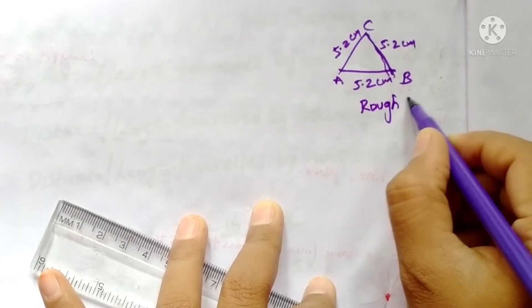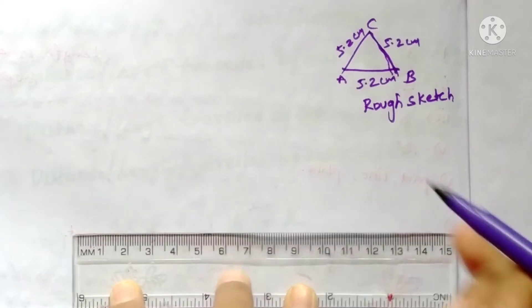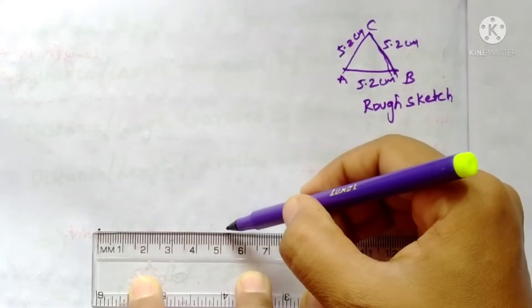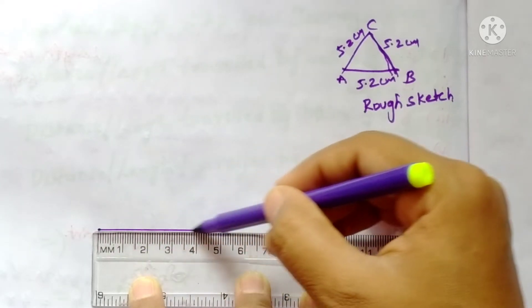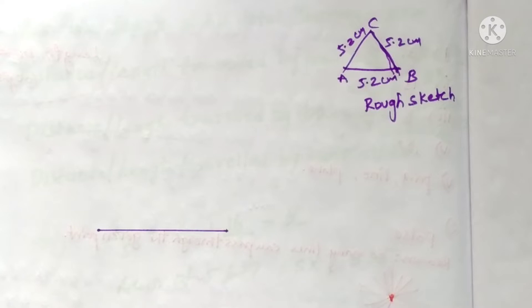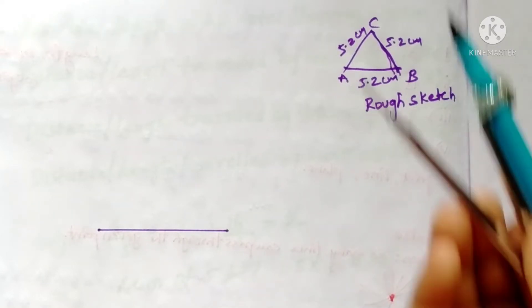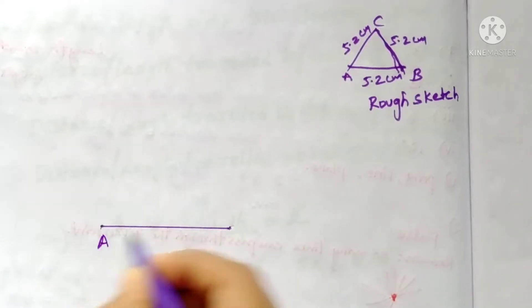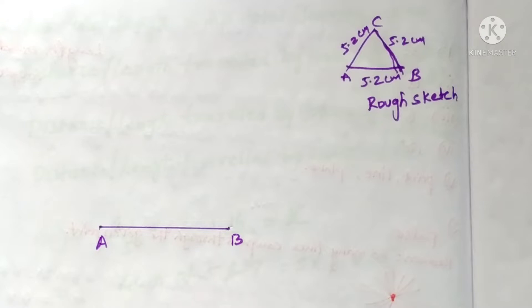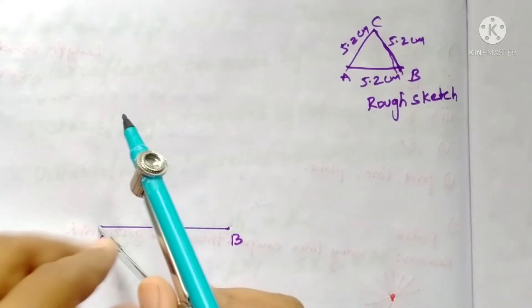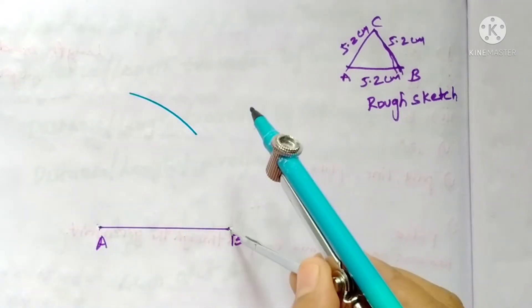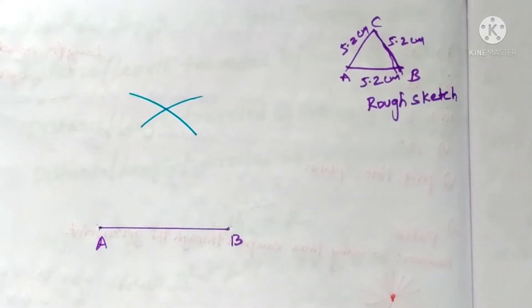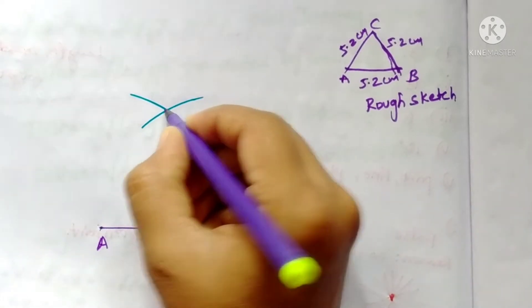Now we have to construct it. Take 5.2 centimeters and draw a line segment of 5.2 centimeters. All three sides are equal, so again take the same radius with the compass. If we give the name, it is AB. Now from A as center, draw an arc.